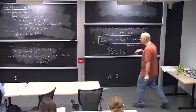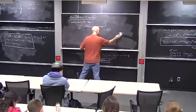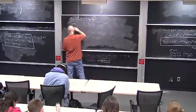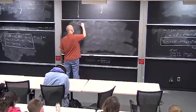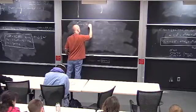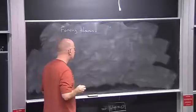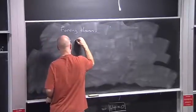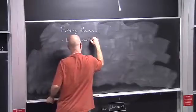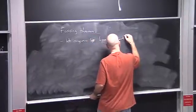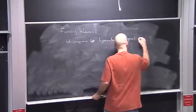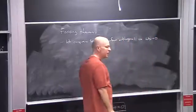Let me write down the focusing theorem. We let the congruence be hypersurface orthogonal, meaning ω = 0. And we impose the strong energy condition: R_μν u^μ u^ν ≥ 0, meaning the component of the Ricci tensor along u cannot be negative. That's a statement that positive Ricci curvature is required in our spacetime in the direction of u.